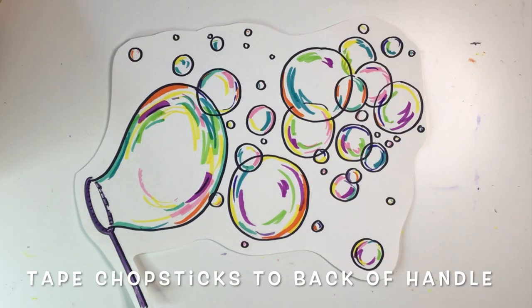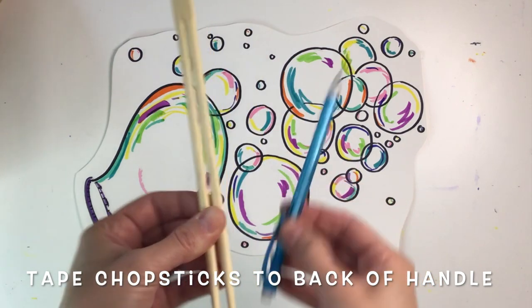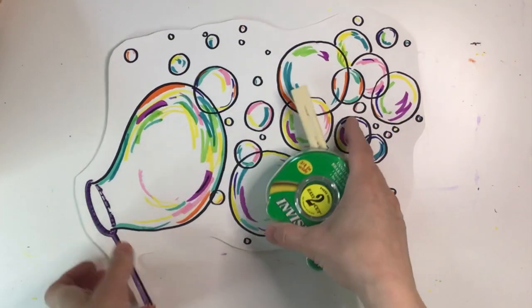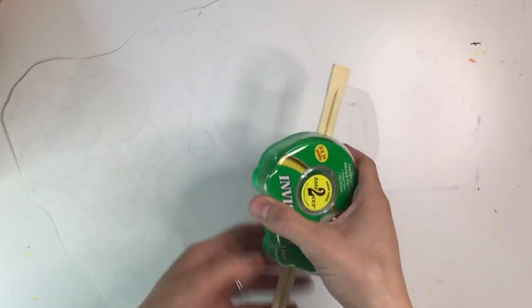For added support, choose something that is sturdy, like chopsticks or a pencil. Grab some tape, flip over your art, and tape it to the handle of the wand.